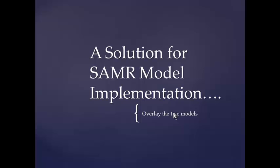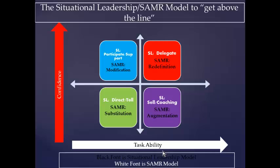So what could be a solution for implementing ICT in our diverse classrooms? I've overlaid the two models — the situational leadership model in black font and the SAMR model in white font. At the lowest level — very low task ability and very low confidence — you must direct and tell the student exactly what to do. It's a very stepwise approach, and this corresponds to substitution. For example: go to Google Earth and look up the directions from A to B.